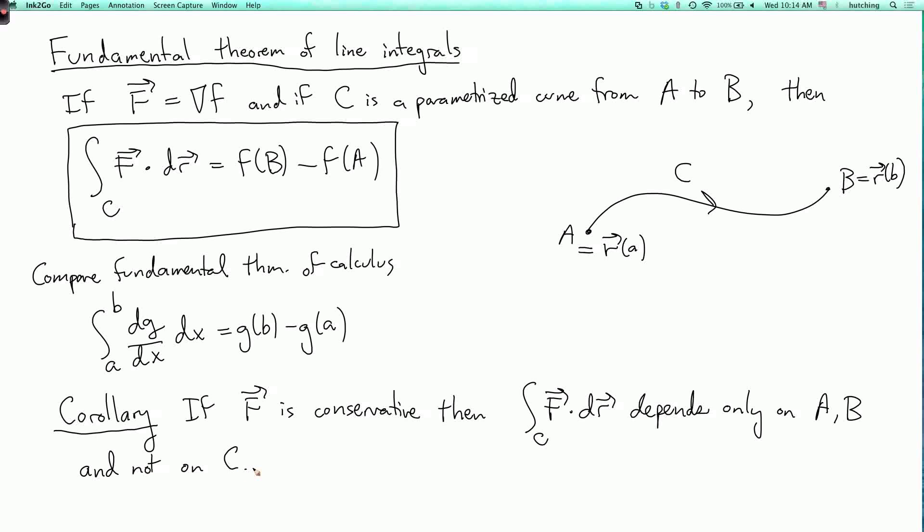Okay, so in the previous lecture segment, we saw an example where we integrated the same vector field along two different curves with the same endpoints, and we got two different answers. So that vector field is not conservative. If you have a conservative vector field, then you'll get the same answer regardless of which curve you choose as long as you use the same endpoints. So let's see an example of how that works.